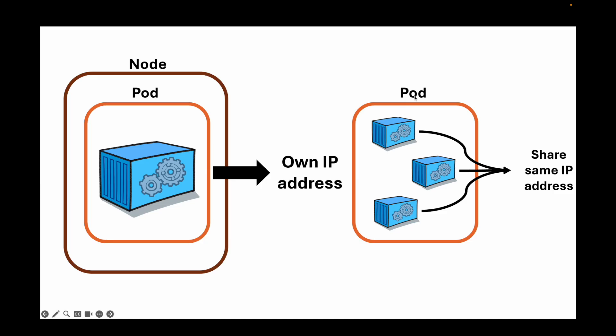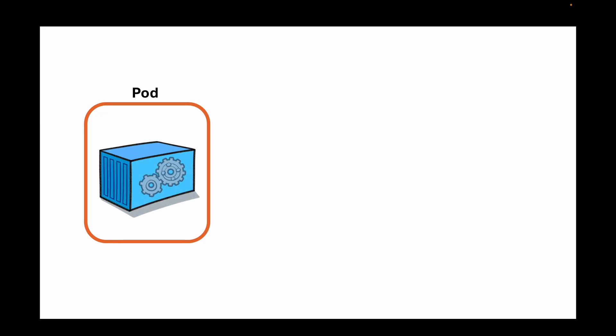When we create new pods or delete and replace them, each time they will be given their own IP address, which can create a lot of IP churn — we will talk about that later. Understand that every time you create a pod there is an IP address associated to it, and that same IP address is applied to your containers. If you create multiple containers in one pod, all the containers will get the same IP address.